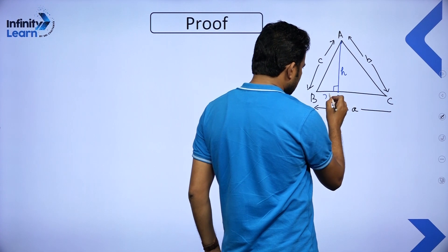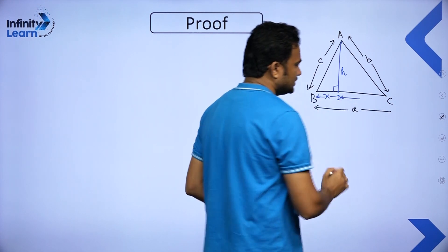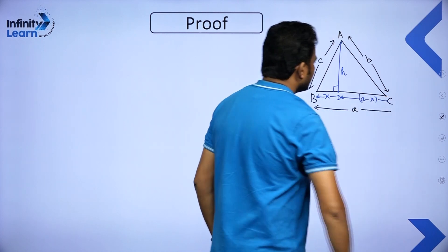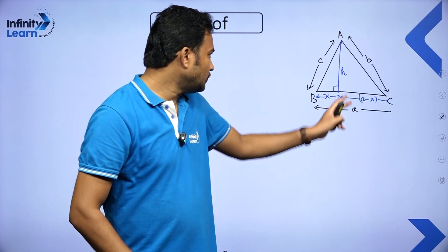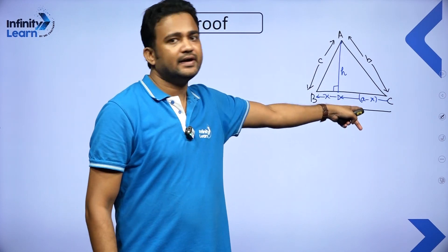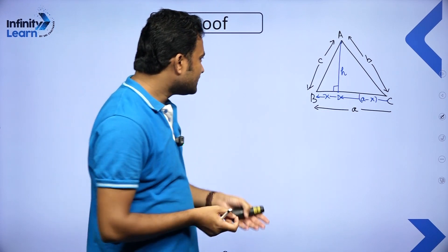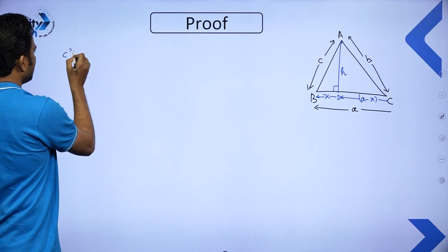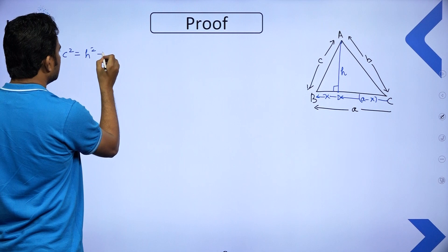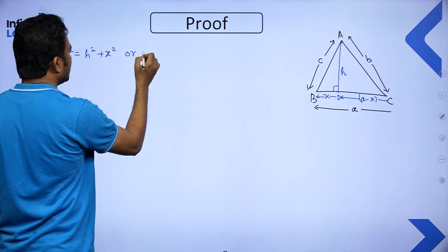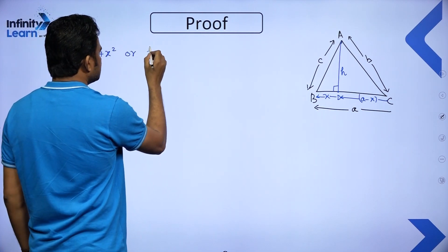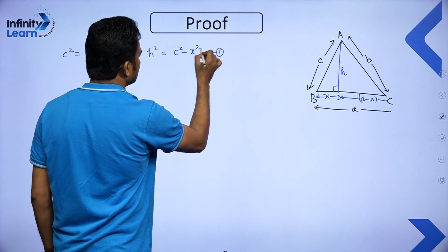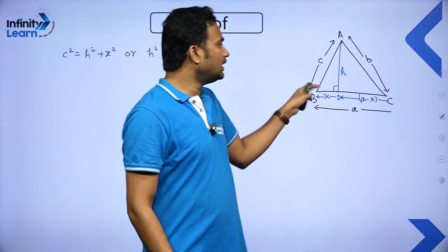If BD is X, then DC will be A minus X, since the total base is A. There are two right-angle triangles: triangle ADB and triangle ADC. Applying Pythagoras' theorem in triangle ADB: C² = H² + X², or equivalently H² = C² − X². Let us call this equation 1.